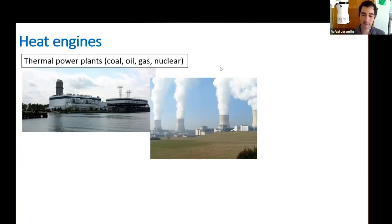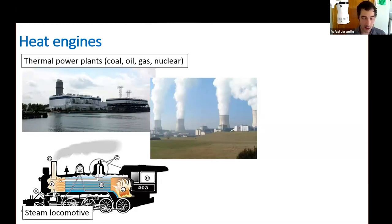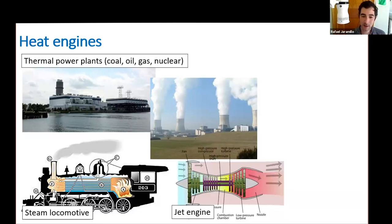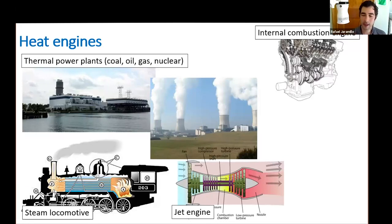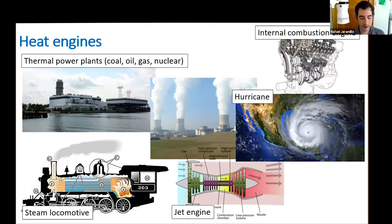Another example of a heat engine — and this is where the field all began — is with steam engines. A steam locomotive takes a heat resource, you burn coal, turn that heat into steam, and the steam does work on a piston. A more contemporary example is a jet engine: you burn fuel, it creates heat, and how you use that heat efficiently is the engineering of the thing. In the internal combustion engine, we burn something that creates heat, and that heat energy is partially transformed into work as the pistons work on a crankshaft. And here's one that's maybe less obvious but definitely a heat engine: a hurricane, which harnesses a temperature difference between the sea surface and the upper atmosphere to create mechanical work.